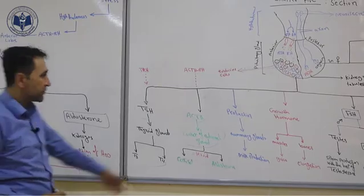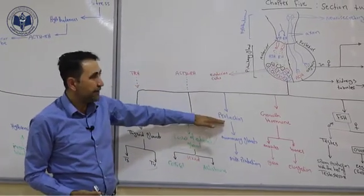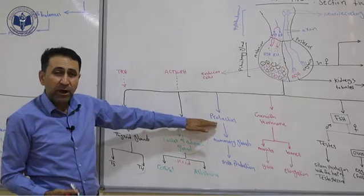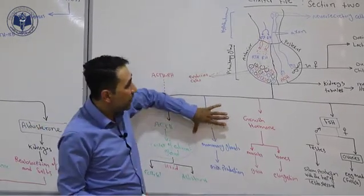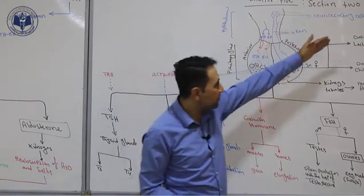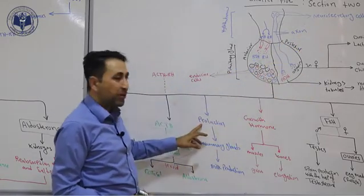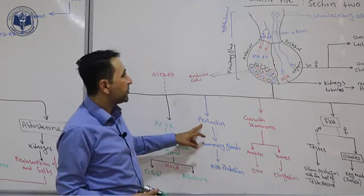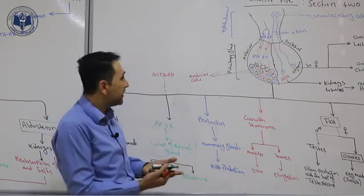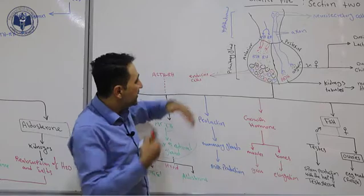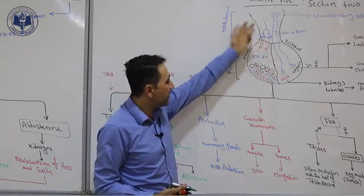Another hormone produced by the anterior lobe is prolactin, which is produced during lactation or breastfeeding. So two hormones are produced during lactation: oxytocin and prolactin. Prolactin is produced when a baby sucks the mother's breast — this sucking stimulates the hypothalamus to produce a releasing hormone.